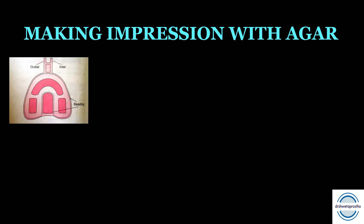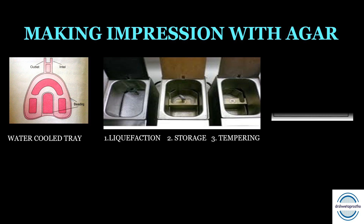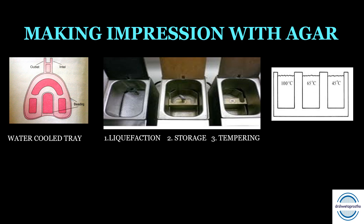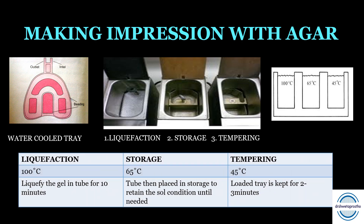For making the impression with agar, rimlock trays are used with water-circulating devices. The rimlock has beading on the inside edge of the tray which helps retain the material, and there is an inlet and outlet for connecting water tubes. A hydrocolloid conditioner is needed — it has three sections: the boiling or liquefaction section, the storage section, and the tempering section. The temperatures are: liquefaction at 100°C, storage at 65°C, and tempering at 45°C.